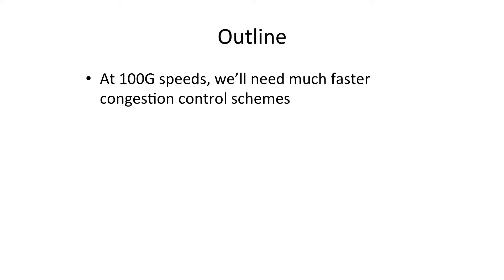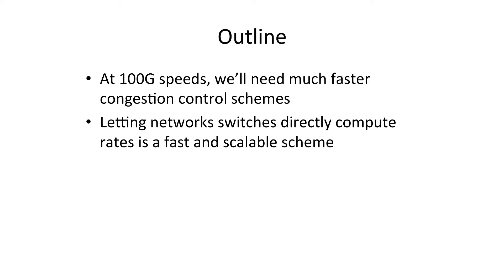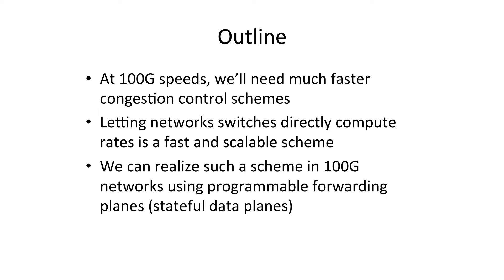This is work done in collaboration with people at Stanford, MIT, and Microsoft Research. In this talk, I'm going to first describe why at 100 gigabit per second speeds we'll need much faster congestion control schemes than what we use today. Then I'll try to convince you that letting the network switches directly compute the rates in the data plane is a fast and scalable scheme. And then I'll describe how we can realize such a scheme in 100 gig networks using programmable forwarding planes.